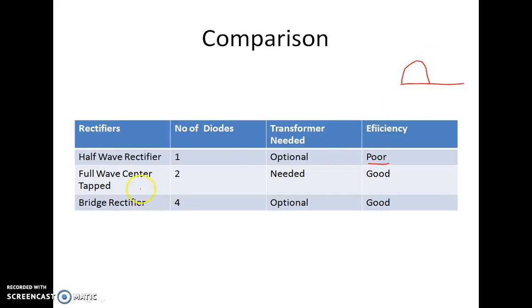In full wave center tapped, two diodes are connected but we have a special type of transformer which is needed, which is the center tapped transformer, but the efficiency is good because both the cycles are converted into the waveform.